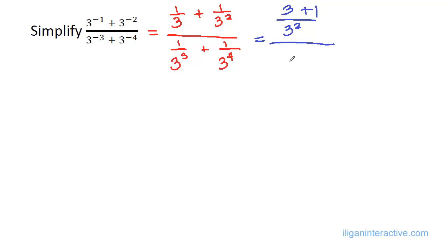On the denominator, the LCD will be 3 to the 4th. 3 to the 4th divided by 3 cubed is 3, plus 1.